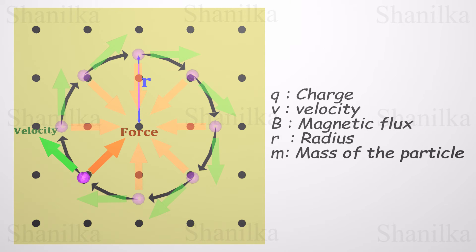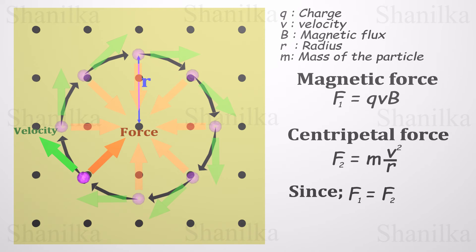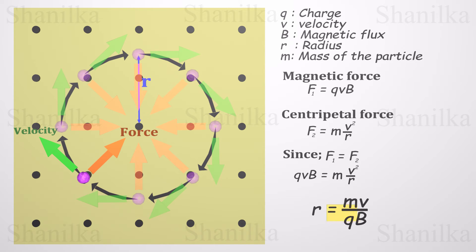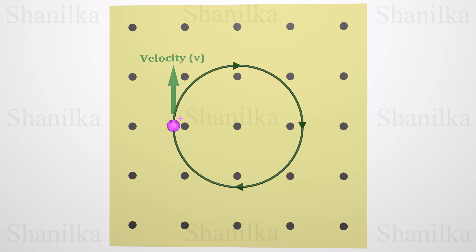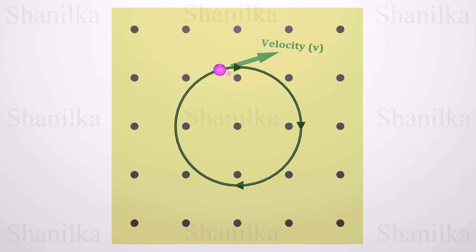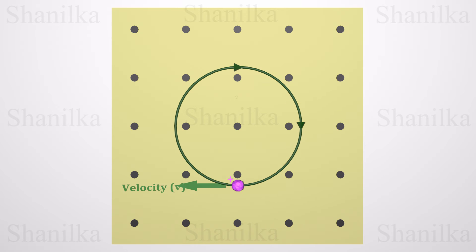If we know the charge, velocity, and mass of the charged particle and the magnetic flux density, we can use the laws of circular motion to find the radius of this circle. Centripetal force equals magnetic force, so the radius is equal to m times v divided by q times B. A moving electric charge whose velocity is perpendicular to the magnetic field will feel a magnetic force causing centripetal acceleration, changing the direction of velocity while keeping its magnitude constant, so the charge follows a circular pathway.